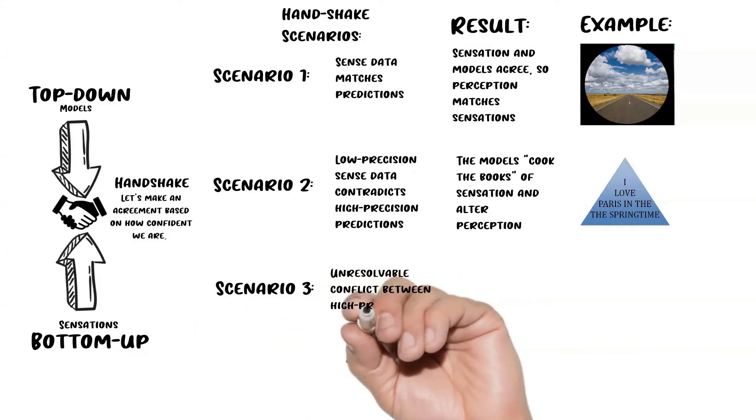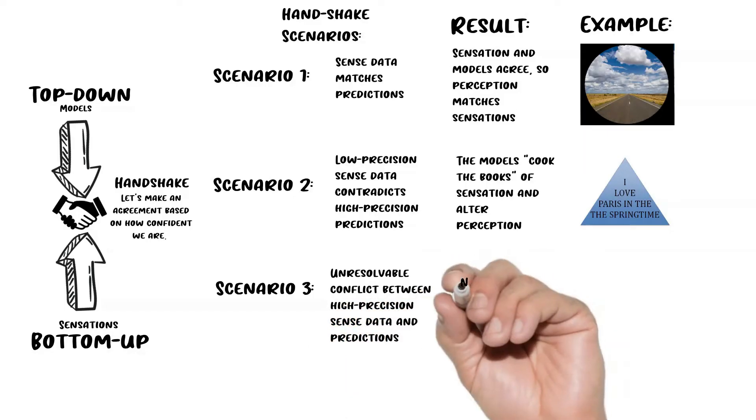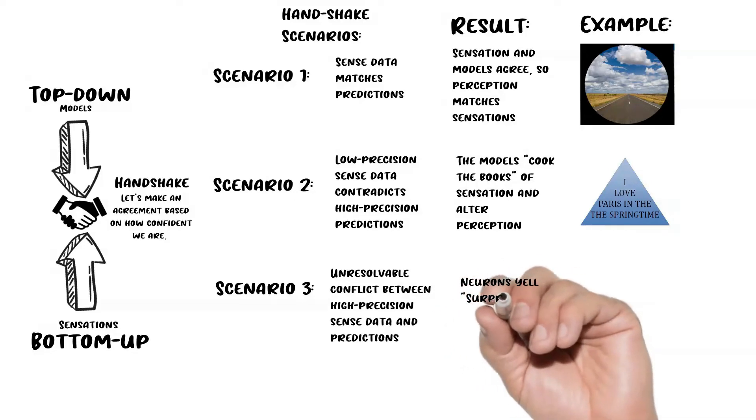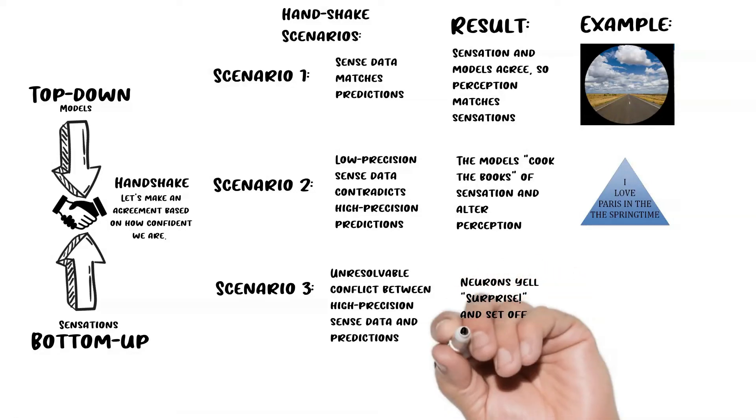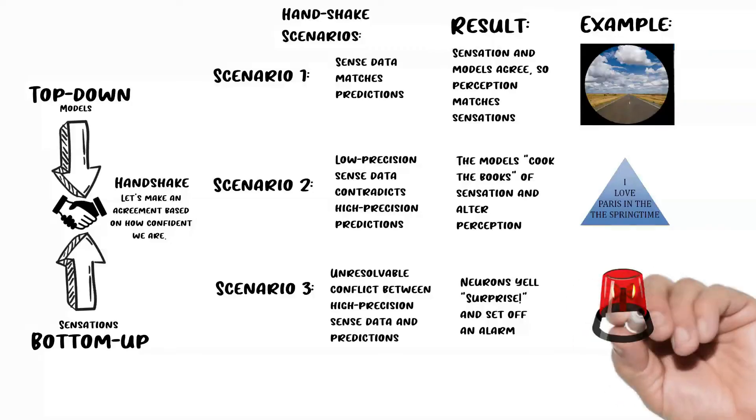Now scenario three is a little more complicated. I'm going to go into more detail about it, but it occurs when there's an unresolvable conflict between high precision sense data and predictions. The higher the degree of the mismatch and the higher the supposed precision of the data that led to the mismatch, the more surprise will occur and the louder the alarm will be that will be sent to the brain.